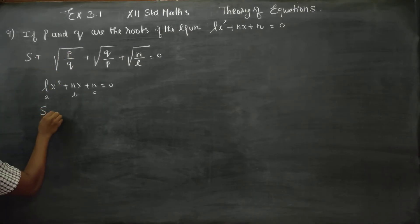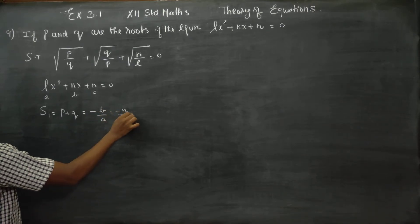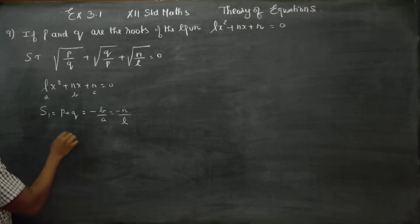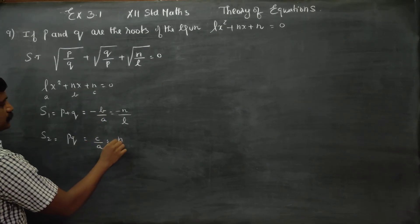First of all, S1 is P plus Q. One root at a time, sum of one root at a time. The formula is minus B by A, which is minus N by L, so P plus Q equals minus N by L. Then S2 is two roots at a time, P into Q. P into Q equals C by A. The answer is N by L.